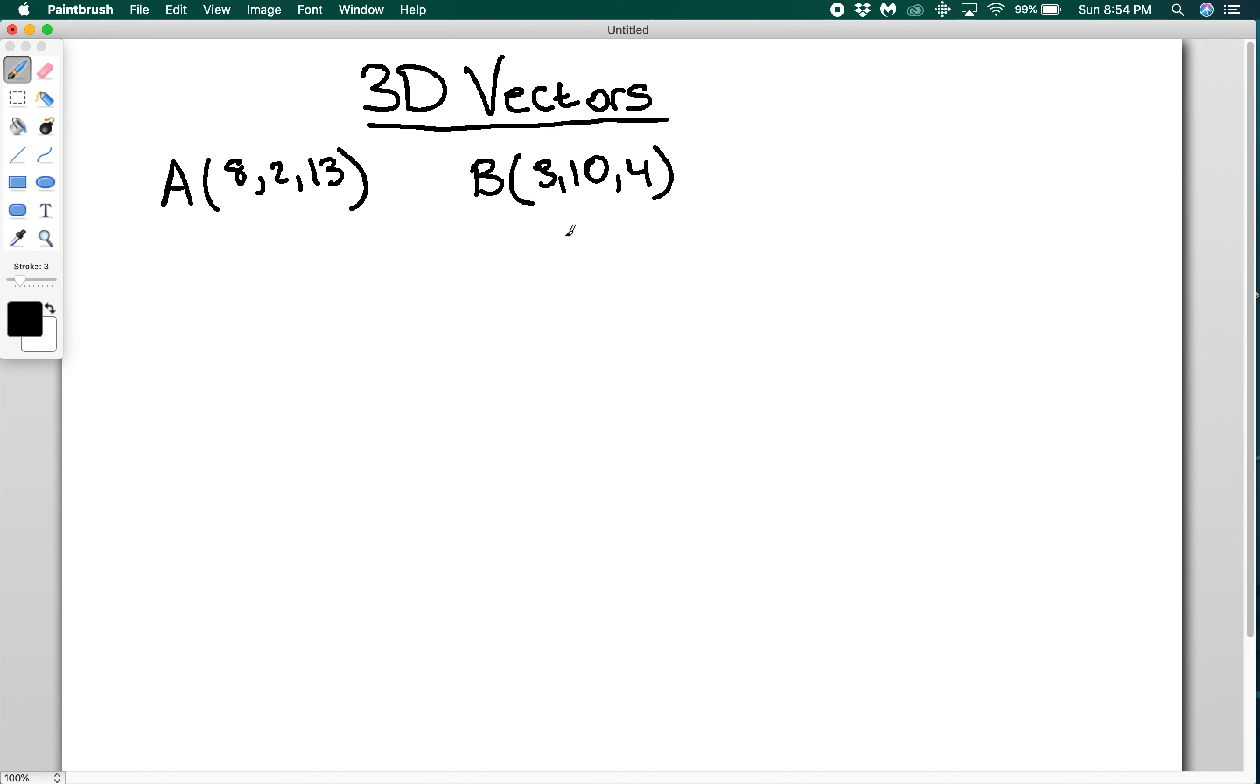So I want the displacement vector between these two points. So we get these just like we would in 2D, where you're going to say that the displacement vector AB is simply going to be equal to the vector that goes to B minus the vector that points to A. So we do that, and we get a vector that is (-5, 8, -9).